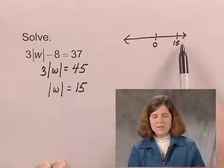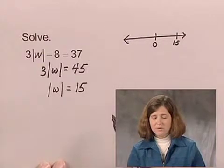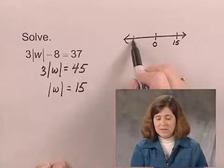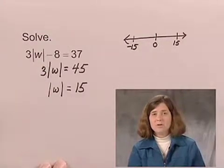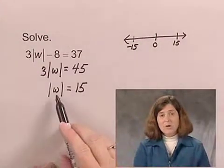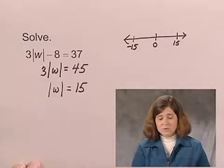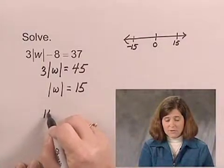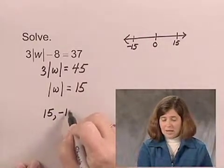15 is one answer that's 15 units away from 0, but there's another answer, negative 15, is also 15 units from 0. So there are actually two possible answers for W: 15 and negative 15.